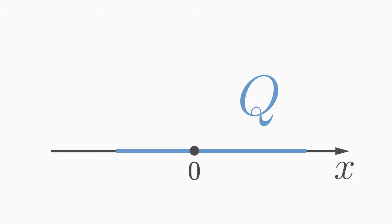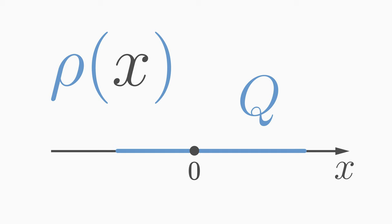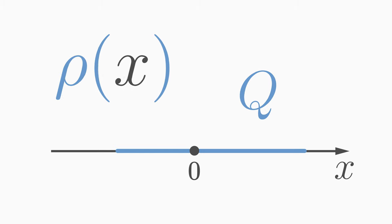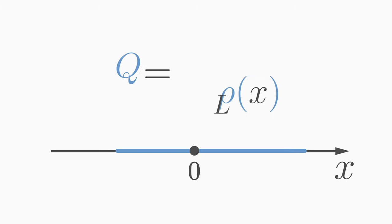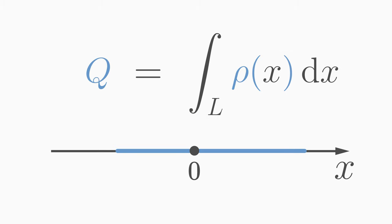Let us consider a charge Q smeared out over a thin line. We can describe this spread-out charge with a one-dimensional charge density ρ. Since it is one-dimensional, it depends only on one spatial coordinate x. The one-dimensional charge density is charge per length, meaning we can calculate the charge Q by integrating the charge density over this line. But what if we have a charge concentrated in a single point — a point charge? Let's assume Q is located at the origin, that is at x equals zero.